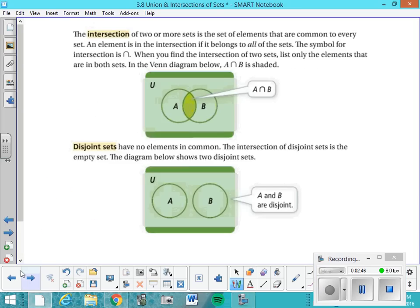Now an intersection is abbreviated with the upside down of the union. It looks like that. So write this one down. The intersection of two or more sets is the set of elements that are common to every set. And that's all you have to write down. An element is in the intersection if it belongs to all the sets. When you find the intersection of two sets, you list only the elements that are in both sets or the overlap, if you will. In the Venn diagram below, you can see that A intersect B is shaded in right there. Disjoint sets, you can notice here, are sets where the Venn diagram A and B have no overlap whatsoever. And that would be disjoint or empty set.